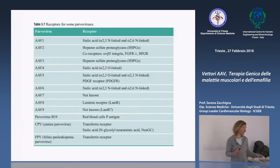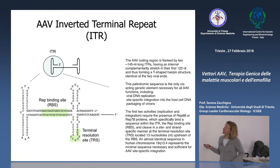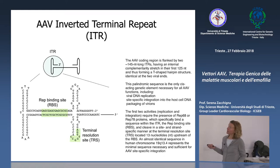Esistono sierotipi che trasducono molto meglio il fegato, come AAV8; altri più efficienti dopo somministrazione locale nel muscolo e nel cuore, come AAV6; altri come AAV9, che hanno la capacità di diffondersi molto di più e sono superiori nel trasdurre dopo somministrazione per via sistemica intravenosa o intraperitoneale.